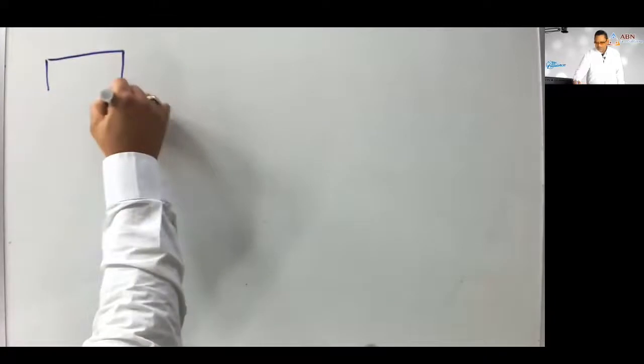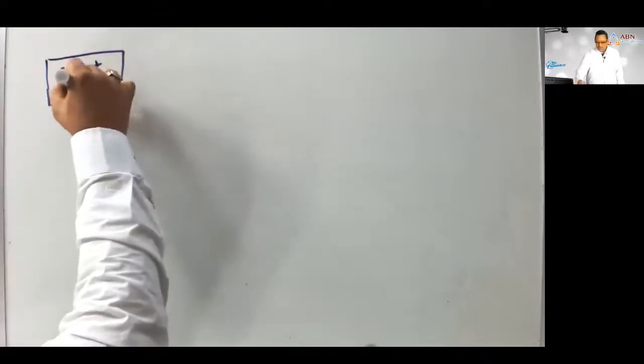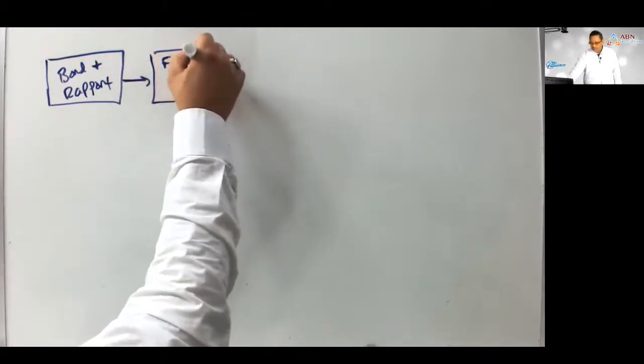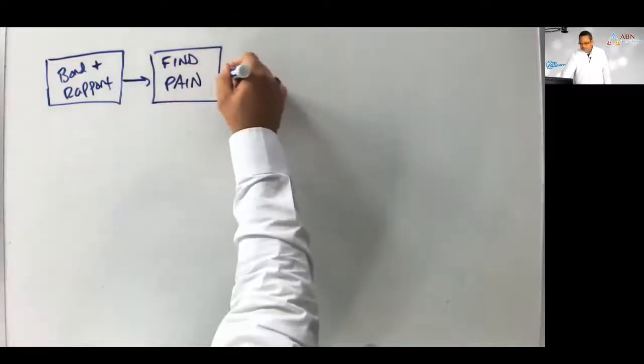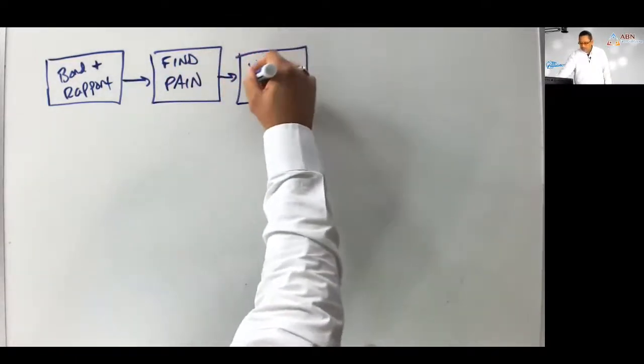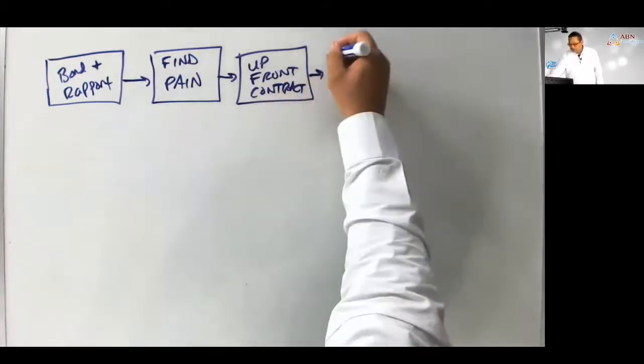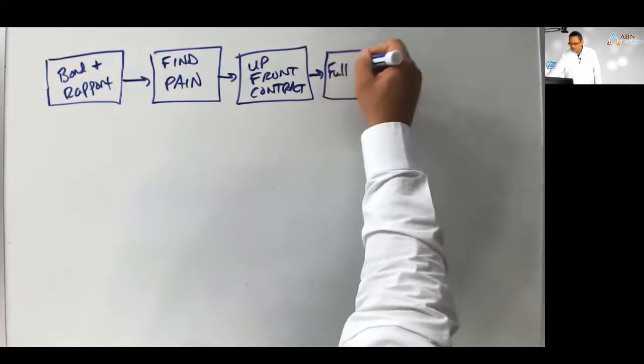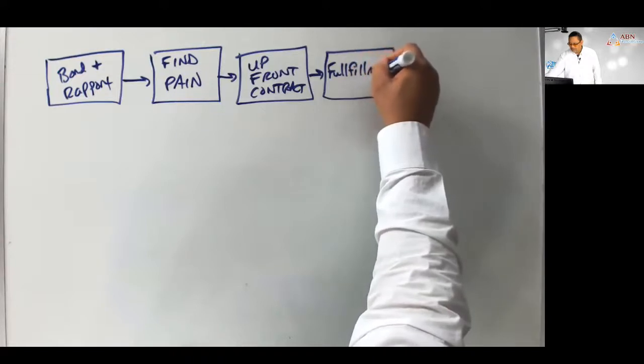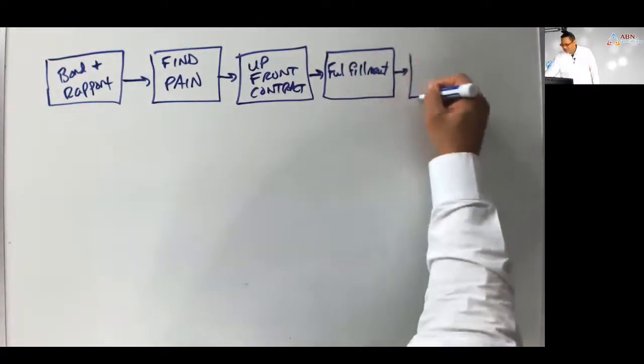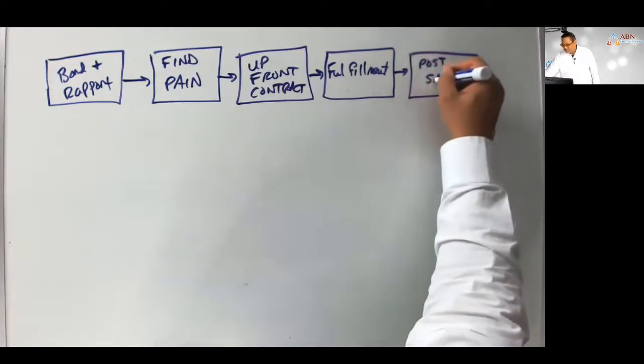Let's talk about the five phases in the process. I'm going to put them horizontally. You have the bond and rapport, which then goes into find the pain, which then goes into the upfront contract, which then goes into fulfillment, and then post sale.